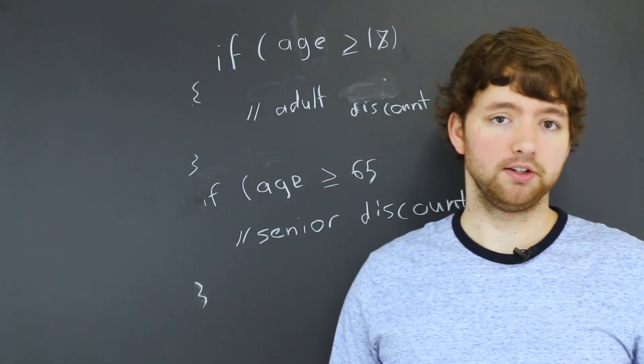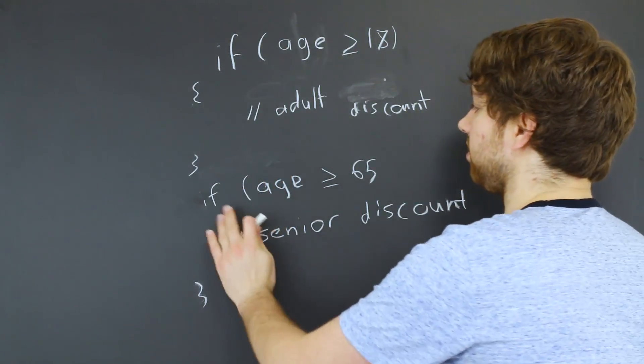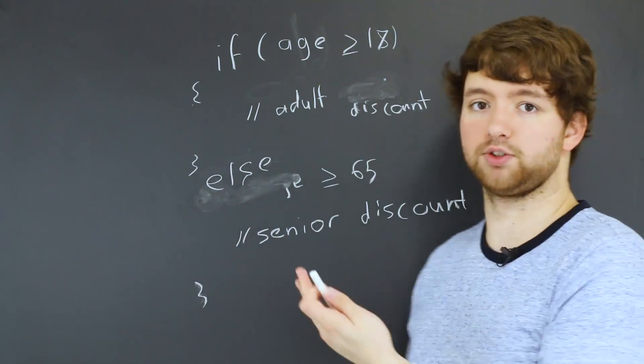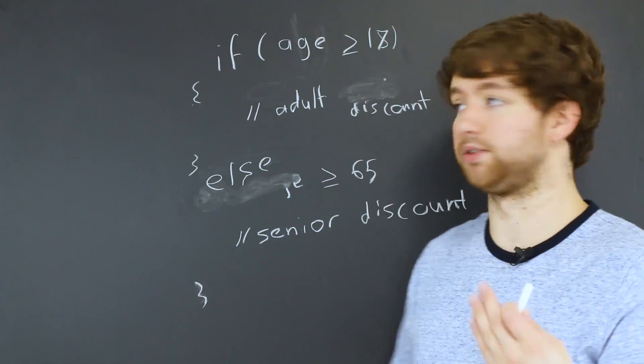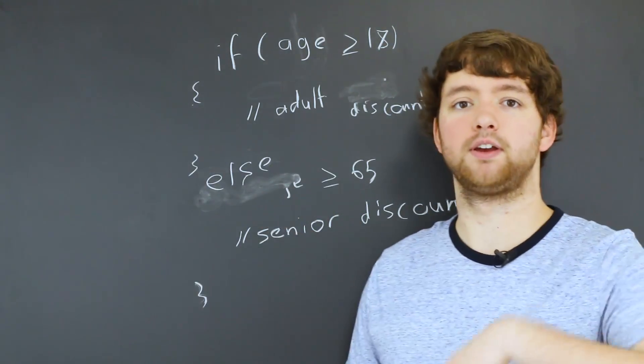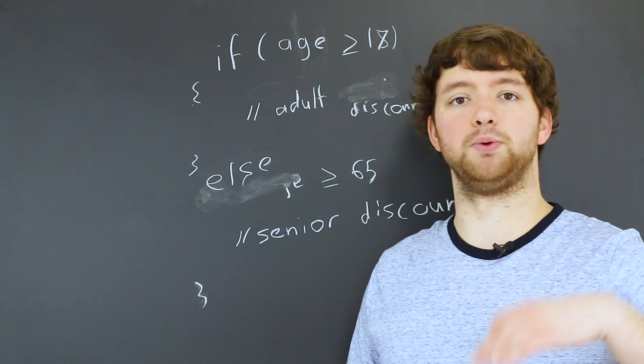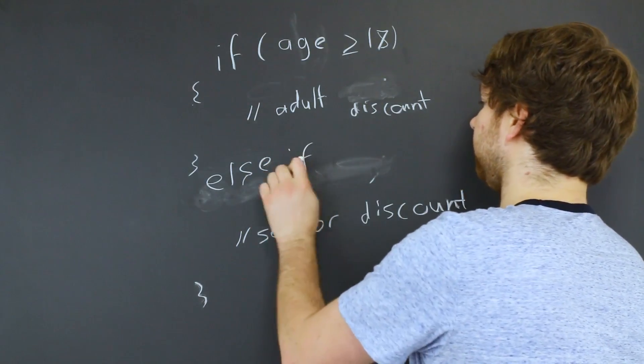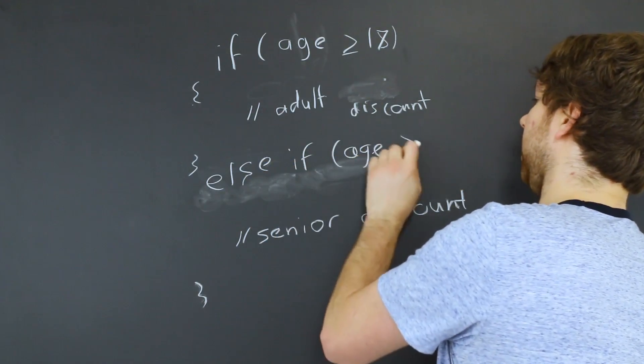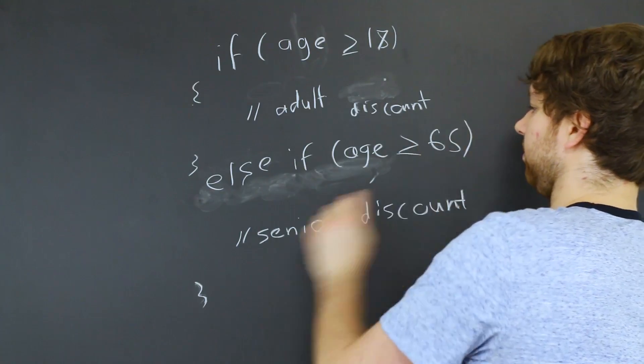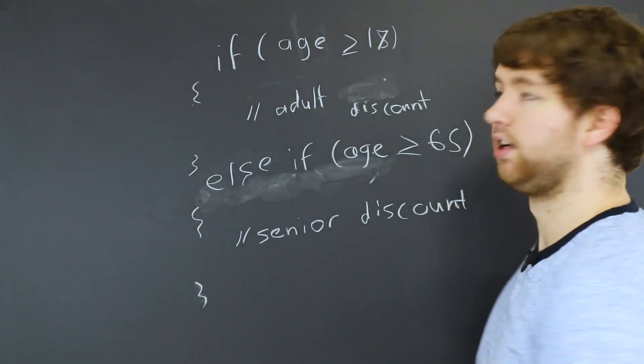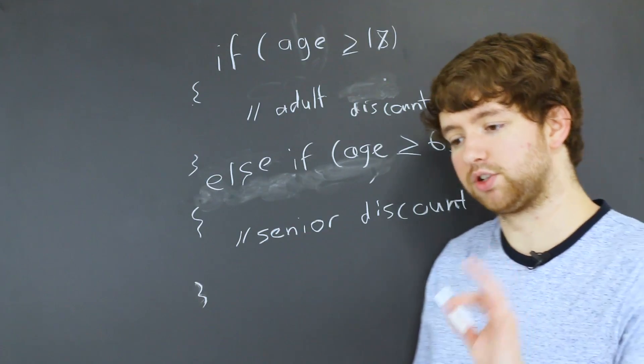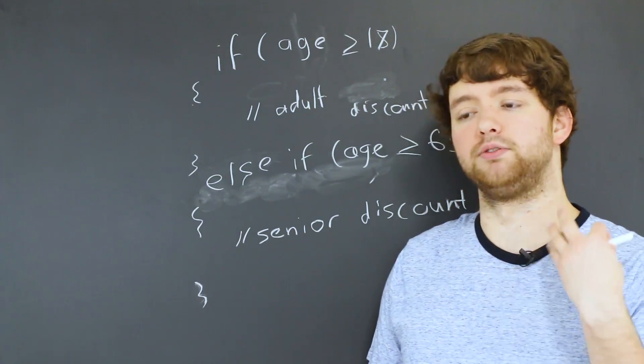If you want it to be one or the other instead of using multiple if statements, you would use an else statement. You could have an else, and actually in this situation you would want this to be an else-if because if you just use an else, if someone was like six they would also evaluate in the else statement. So we would have an else-if and it would be age greater than or equal to 65 and do this stuff.